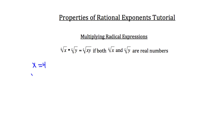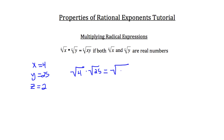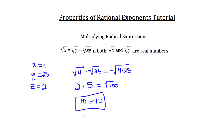In theory, that should equal the square root of x times y — 4 times 25. Note that when the index of the radical is 2, we don't write it; it's just the square root. The square root of 4 is 2, times the square root of 25, which is 5, equals the square root of 4 times 25, or the square root of 100. You know that 2 times 5 is 10, and the square root of 100 is also 10. That proves multiplying radical expressions works.